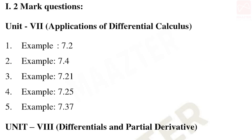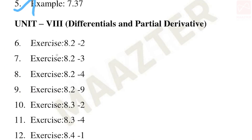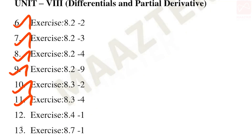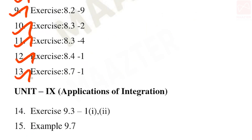For the two-mark section, Unit 7 Applications of Differential Calculus: examples 7.2, 7.4, 7.21, 7.25, and 7.34. Then Unit 8 Differentials and Partial Derivatives: exercise 8.2 — second, third, fourth, and ninth problems; exercise 8.3 — second and fourth; exercise 8.4 — first; and exercise 8.7 — first. These are the important two-mark questions in Unit 8.